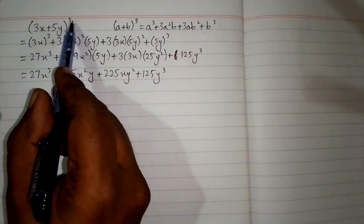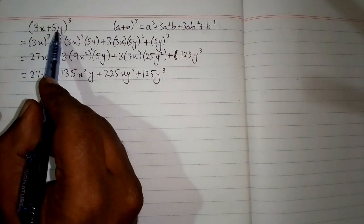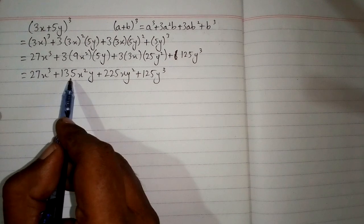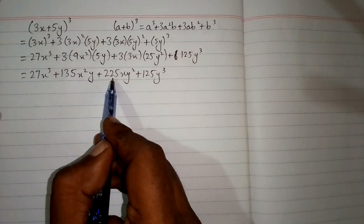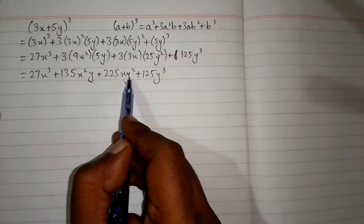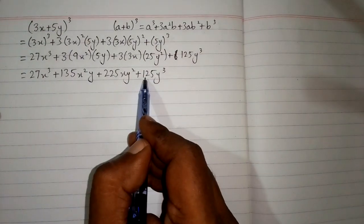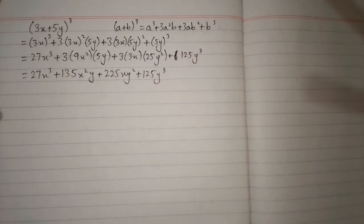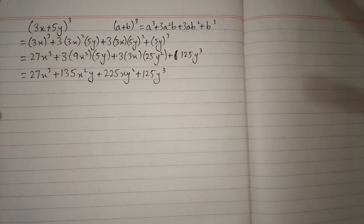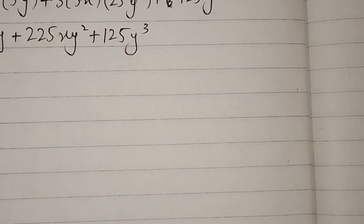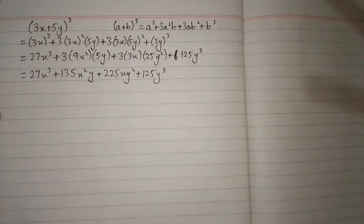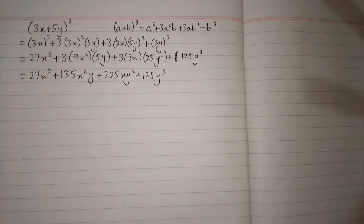So the cube of 3x plus 5y is 27x cube plus 135x squared y plus 225xy squared plus 125y cube. Thank you.